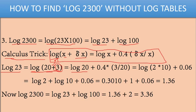Now what is log 20? I'm writing log 20 as log(2 × 10). When I solve 0.4(3/20), I get 0.06. So I've simplified log 23: first as log(20 + 3), then log 20 as log(2 × 10), and the calculation gives 0.06.